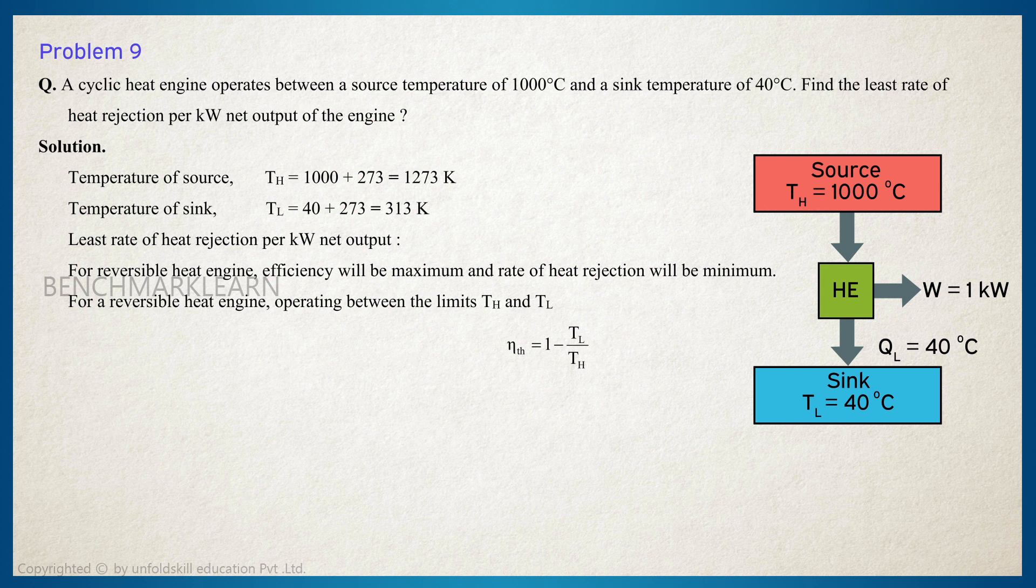The thermal efficiency is equal to 1 minus TL by TH, which is equal to 1 minus 313 by 1273, which is equal to 0.754.